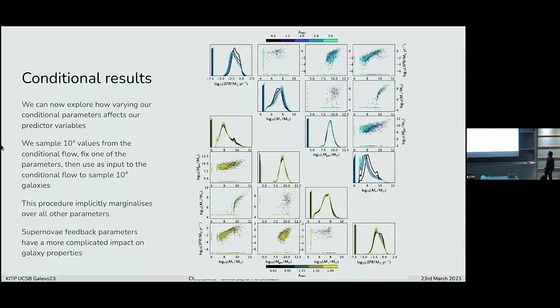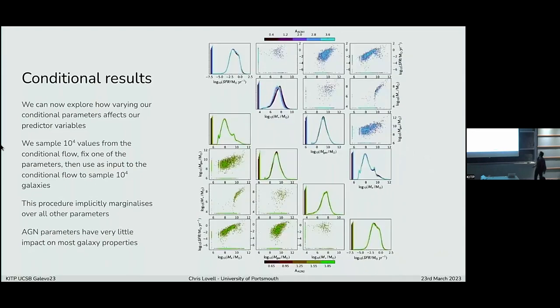Things get a little bit more interesting when you look at the other parameters. So now we're looking at ASN1 in the top right and ASN2 in the bottom. You can see that ASN1 has a big impact on star formation rates. You tend to see larger black hole masses for a larger ASN1 value. And gas masses are kind of completely unaffected, interestingly. Whereas ASN2, you don't see as large an impact on the stellar mass in particular. This is telling us something about how the model works in a way that you perhaps can't do with just the one piece set where you're looking at a very small sliver of the manifold. This is implicitly marginalizing over everything else.